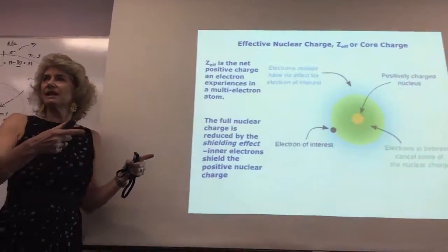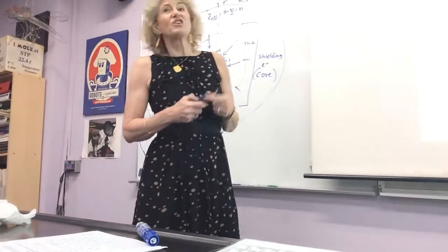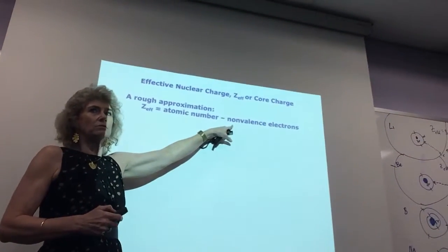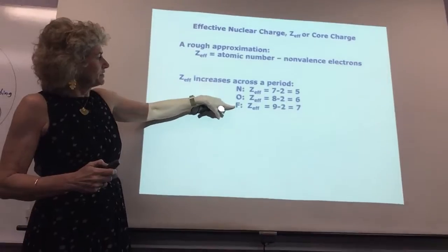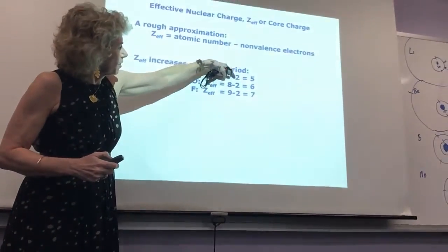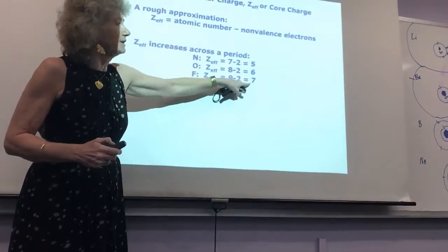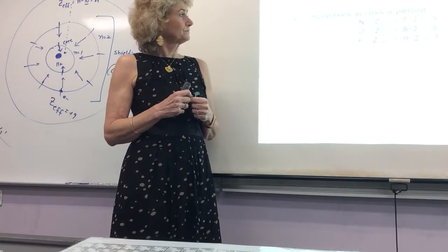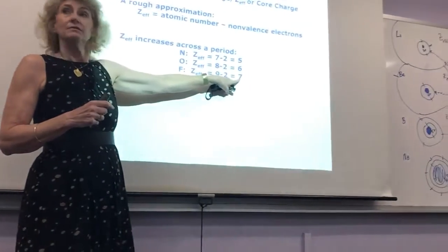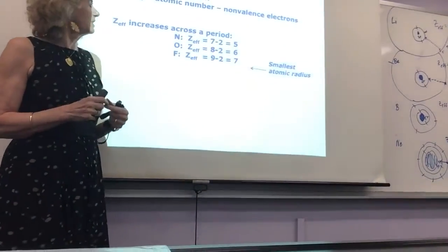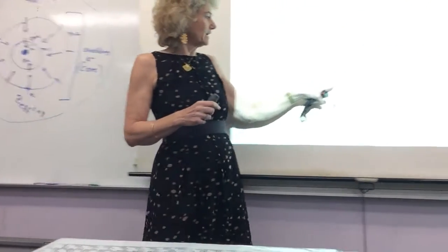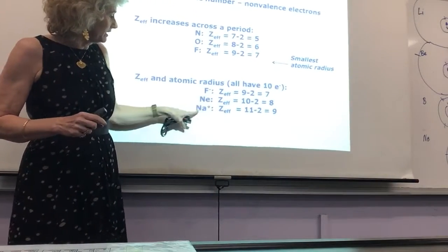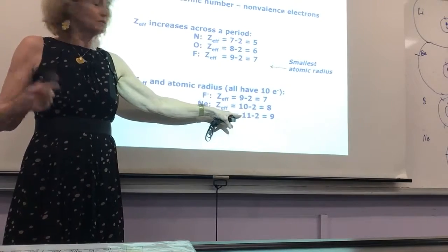The full nuclear charge is reduced by the shielding effect. The inner electrons shield the positive nuclear charge, but the valence don't shield each other. So yes, you're getting more electrons on the outside, but they're not canceling any nuclear charge. A good rough approximation: take Z, the atomic number, minus any core electrons. Across a period — nitrogen to fluorine, Z is 7, 8, 9 — core is constant, Z effective gets bigger. Which one's going to be smaller? F. Higher charge, only diminished by 2, higher Z effective.